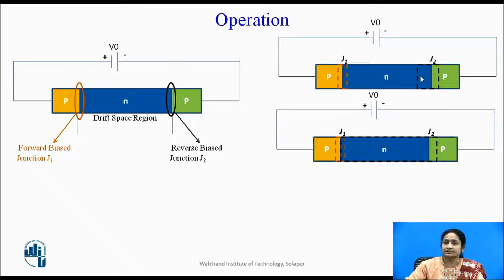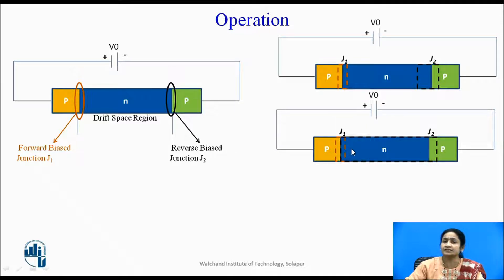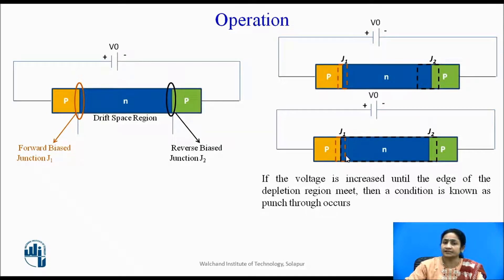Due to the reverse bias condition, the depletion region at J2 goes on increasing towards the left-hand side. As the reverse bias voltage is increased, this depletion region expands toward the left. At one point, if the voltage is increased until the edges of both depletion regions meet, that condition is known as punch-through. When punch-through occurs, emission of carriers takes place.